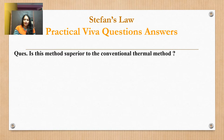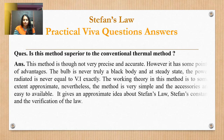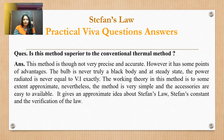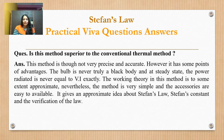Next question: is this method superior to the conventional thermal method? This method is not very precise and accurate; however, it has some advantages. The bulb is never truly a black body, and at steady state the power input is never exactly equal to VI. The working theory in this method is to some extent approximate. Nevertheless, the method is very simple and accessories are easily available, giving an approximate idea about Stefan's Law, Stefan's constant, and verification of the law.